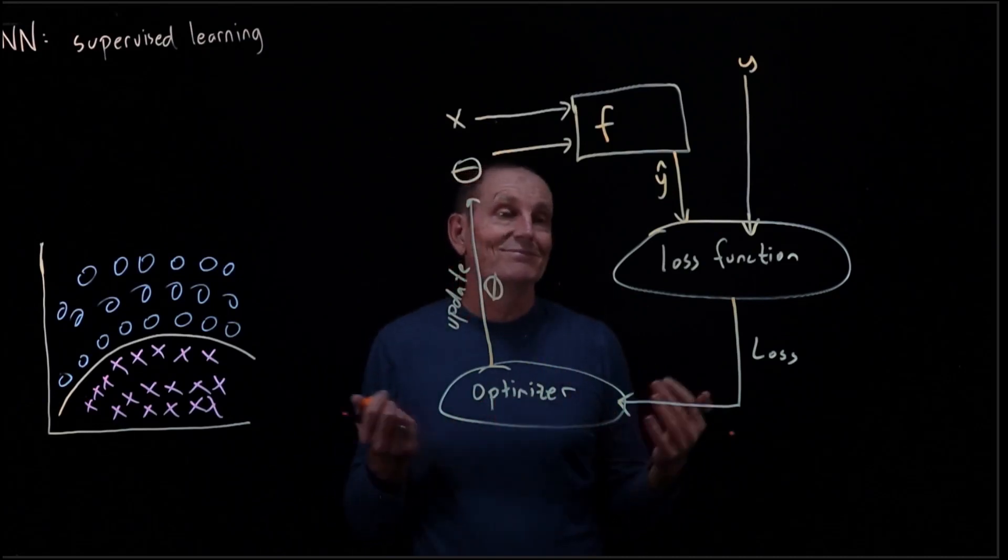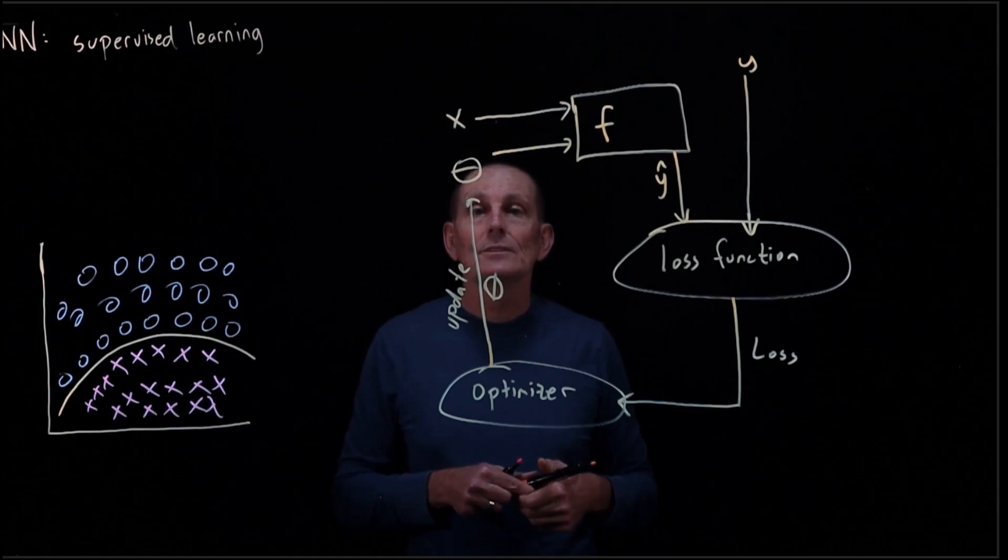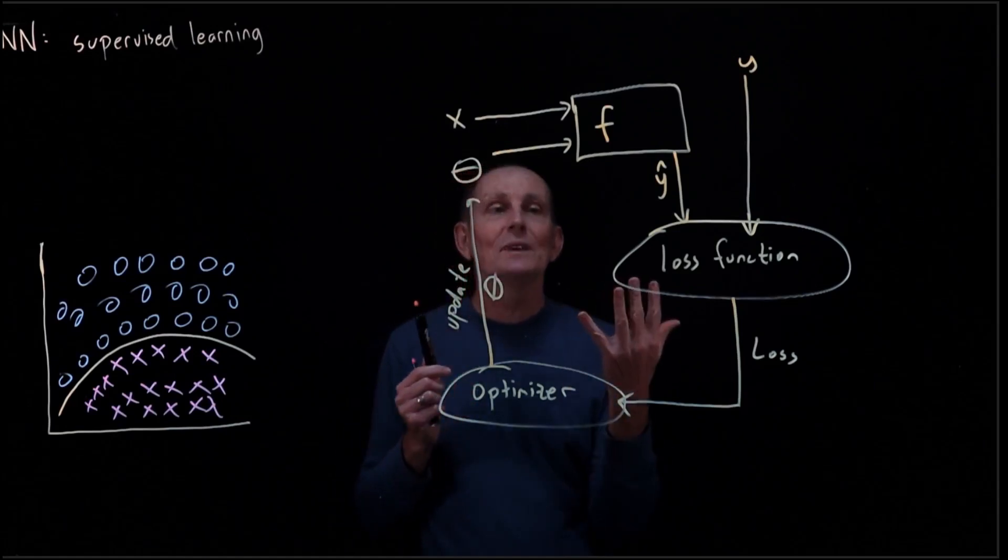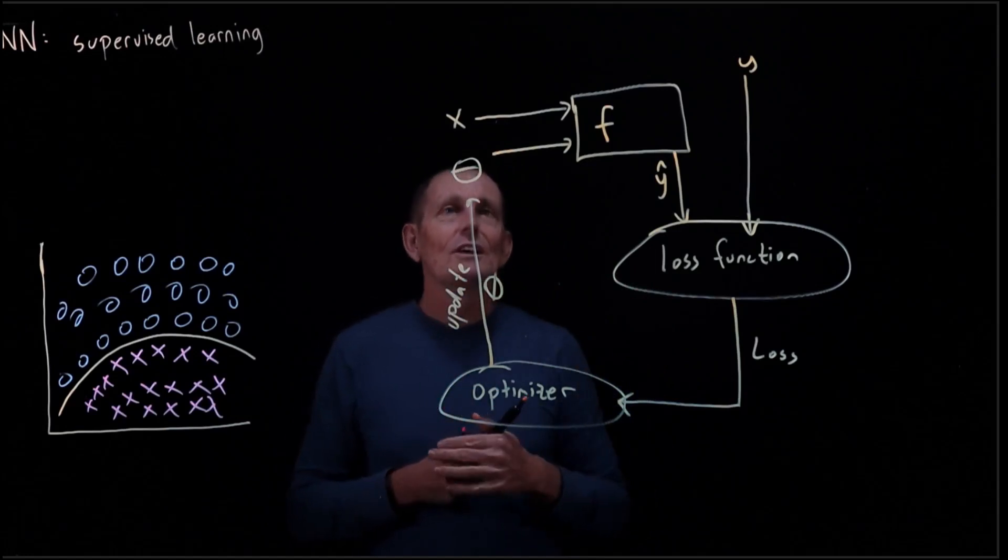To begin with, what theta started at, we normally actually just pick random numbers. So we pick, there's some things we have to do, but we'll normally just pick random numbers.